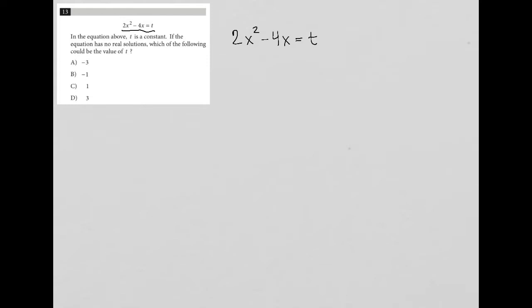So a couple of things are important. t is a constant, not a variable, and we know that the equation has no real solutions. If t were a number, what I would do here is move the t to the left and make this 2x squared minus 4x minus t equals 0. That way I'd have a trinomial and I can do some factoring. I may even be able to use quadratic formula to solve for x. This is just a format that hopefully you're used to seeing when you have a quadratic equation.